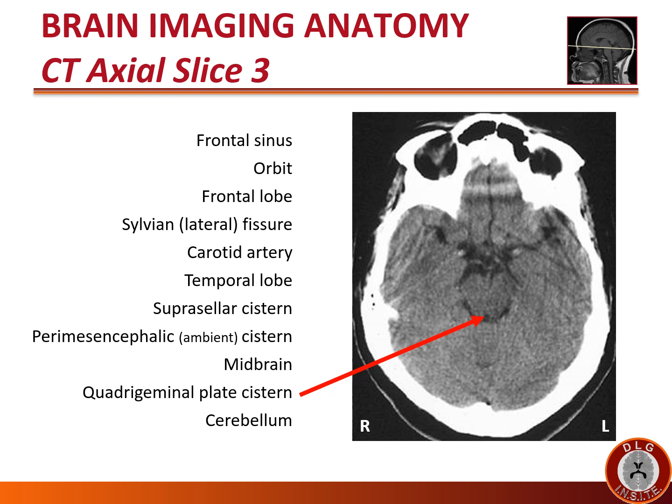The quadrigeminal plate, also known as the tectum (meaning 'roof'), is called that because it roofs the sylvian aqueduct, which lies just beneath those colliculi. This quadrigeminal plate cistern is commonly filled with blood during subarachnoid hemorrhages and may be obscured when there is diffuse cerebral edema.